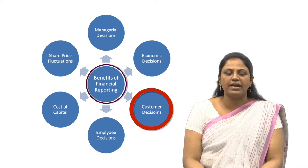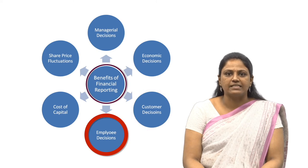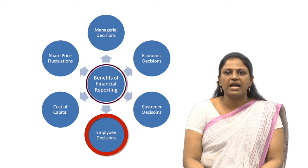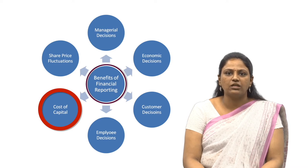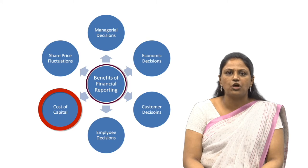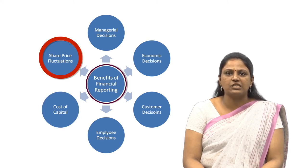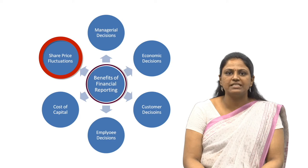Thus, relative decisions can be taken by the management. Employee decisions: in terms of growth potential and promotional possibilities, decisions can be taken using financial statements. Cost of capital: a report by Arthur Anderson stated that good financial reporting should have a favorable long-run effect on a company's cost of capital. Thus, full disclosure of data would have a positive impact on cost of capital. Share price fluctuations: adequate disclosure would prevent fraud and manipulations, which will minimize the fluctuation of company's share prices occurring especially due to ignorance in the investment market.